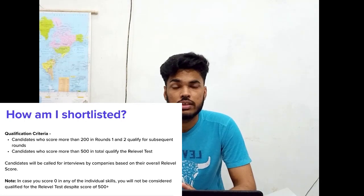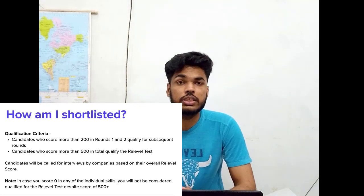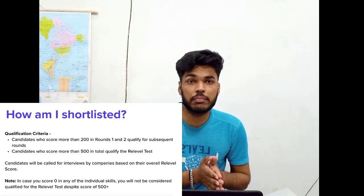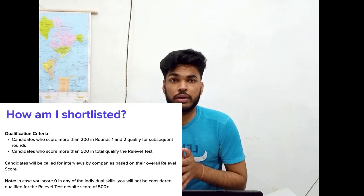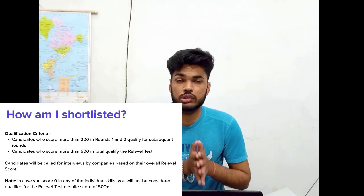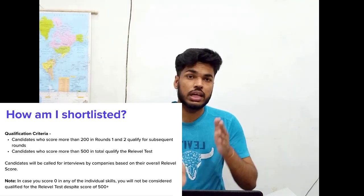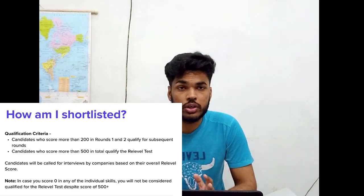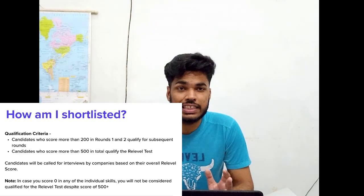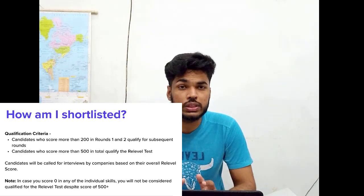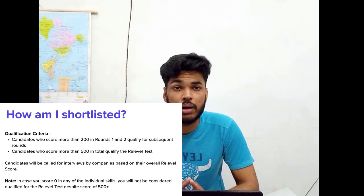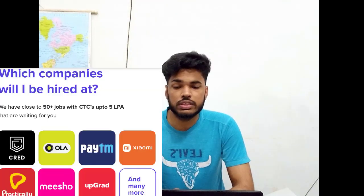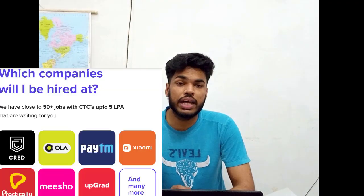To be shortlisted, you need to score 200 marks from the round one and two combination to move on to rounds three and four. In order to qualify the test overall, you need to score 500 marks out of 1000 marks.